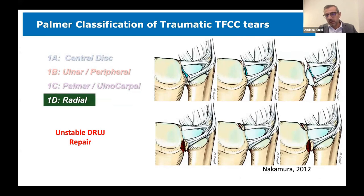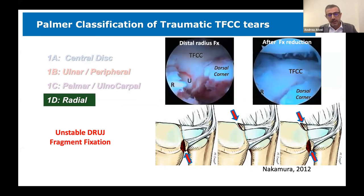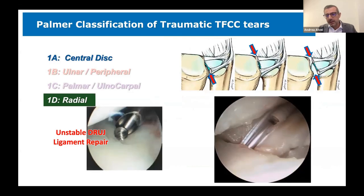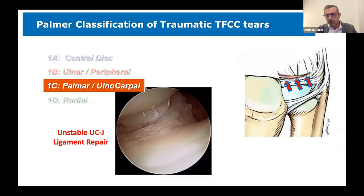Toshi Nakamura attempted a subclassification recognizing the pure ligamentous avulsion from the avulsion with a fragment of the distal radius. Clinically these are very important because they are associated with an unstable DRUJ and should be repaired — either by fixing the fragment back to the distal radius, or using new devices that allow an all-inside repair of the ligament back to its anatomical insertion, restoring DRUJ stability.